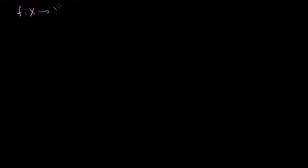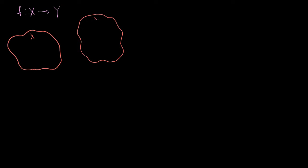So let's say I have a function f, and it is a mapping from the set X to the set Y. We've drawn this diagram many times, but it never hurts to draw it again. So that is my set X, or my domain, and this is the set Y over here, or the codomain. Remember, the codomain is the set that you're mapping to. You don't necessarily have to map to every element of the set — this is just the set that you might map elements to.